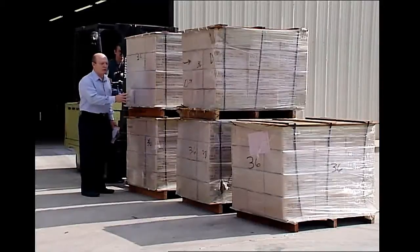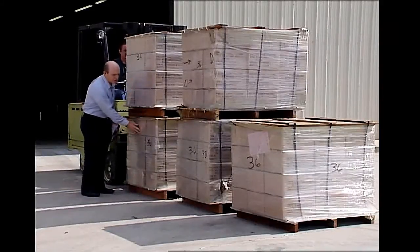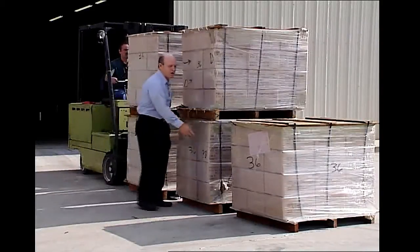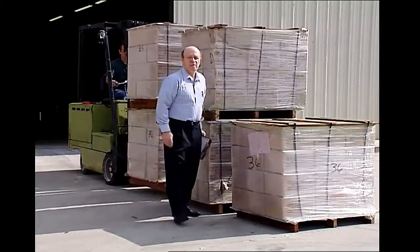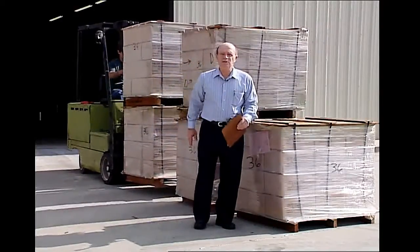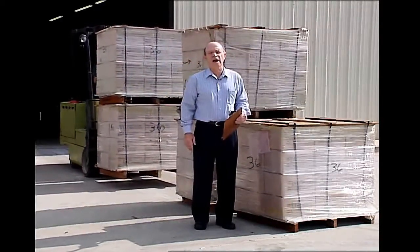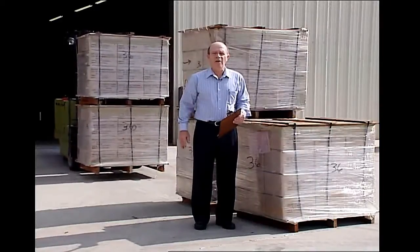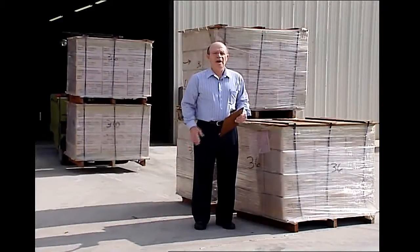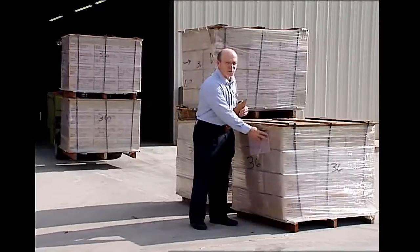We received the shipment of five pallets. One, two, three, four, five. And the total number of books in these five pallets is 8,040. And they are equally divided. How many books are in each one of these pallets?